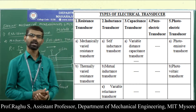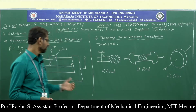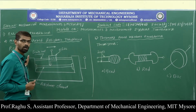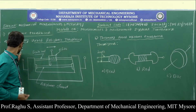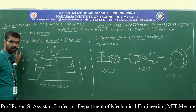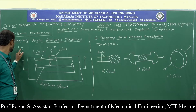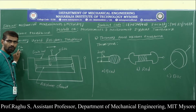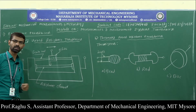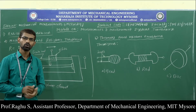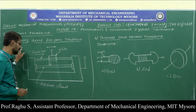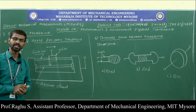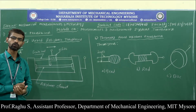First, the resistance transducer. Before discussing the resistance transducer, let us discuss some basic principles. The resistance of a conductor is given by R = ρL/A, where ρ is the resistivity of the conductor, L is the length, and A is the cross-sectional area. The resistance depends on the length, area, and resistivity. When the length or area changes, the resistance also changes.